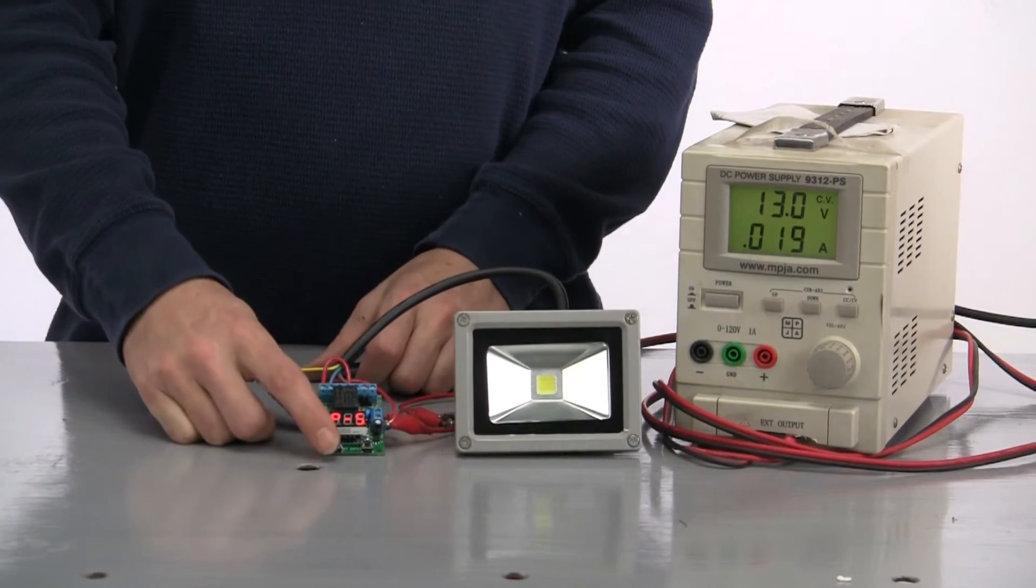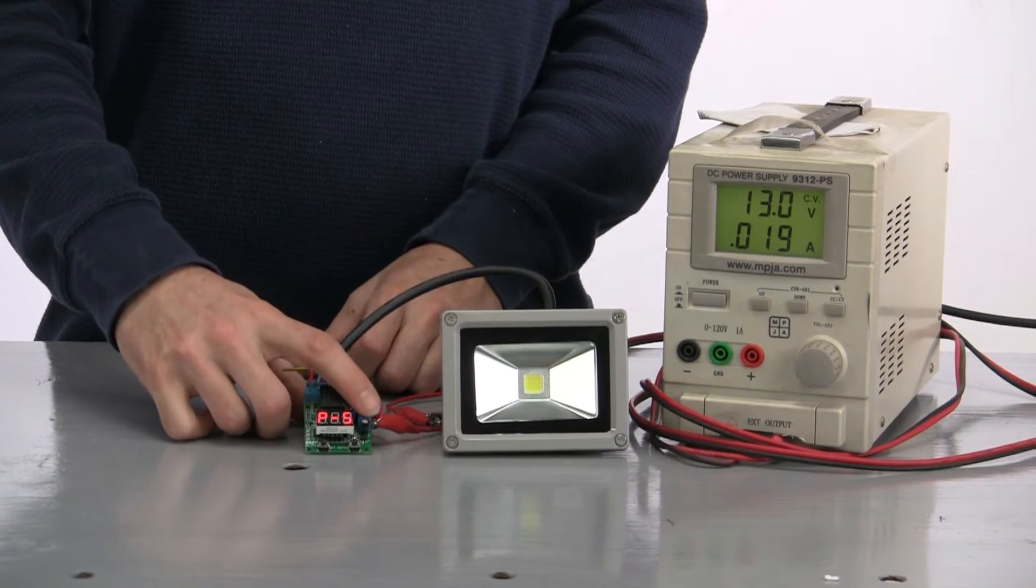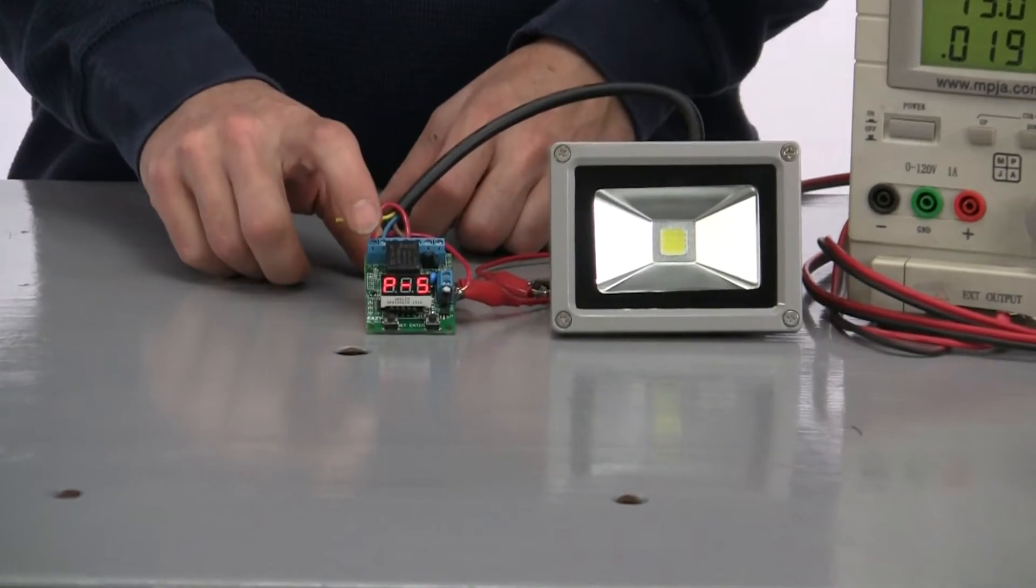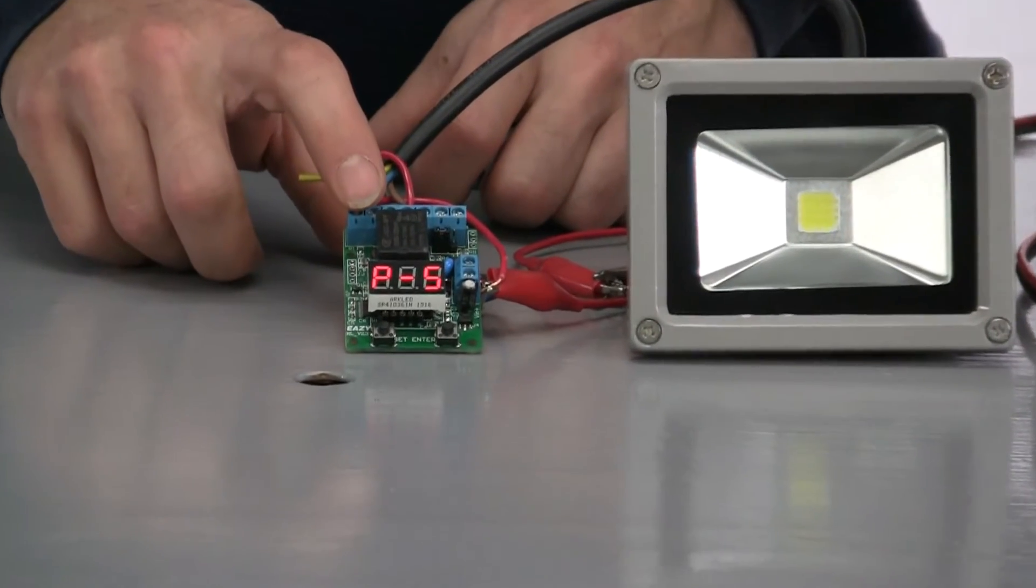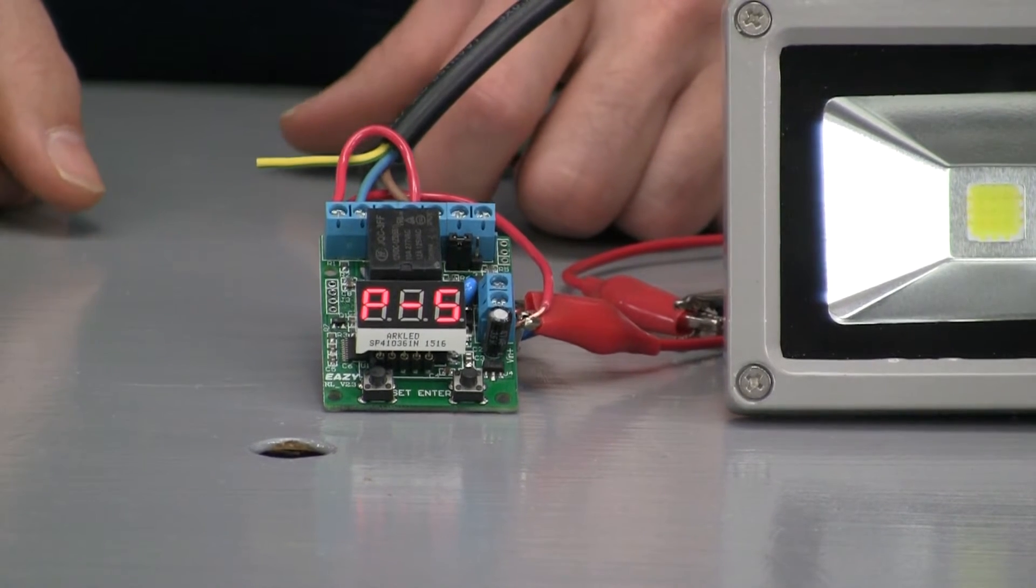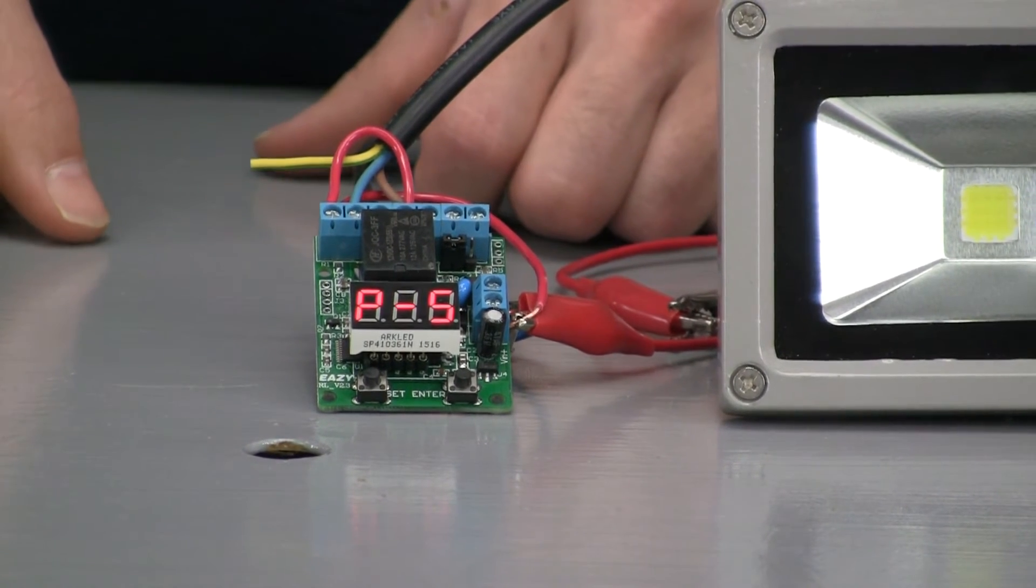This charge controller takes a 12 volt, 10 to 15 volt input and it also has a voltage detection of 0 to 99 volts. But that must remain separate from the voltage input. So it works best with 12 volt battery banks.